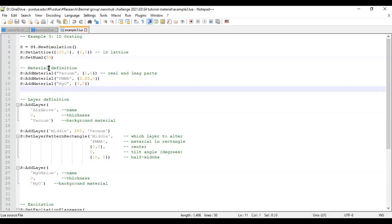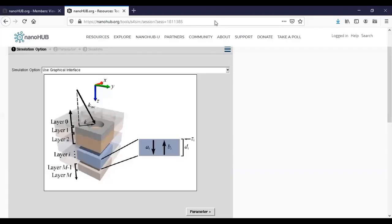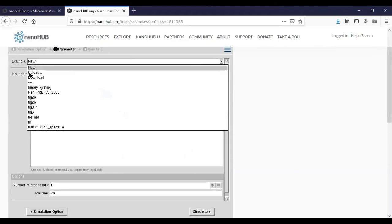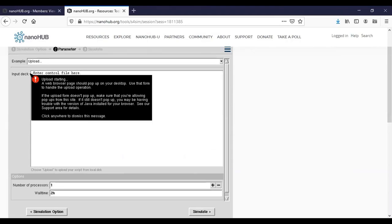Here I have already written this file called exam3.lua, and we're going to upload this file to the S4 tool. We have opened up a new S4 window. This time let's choose upload S4 input deck. Go to next, and we're going to upload our own file.